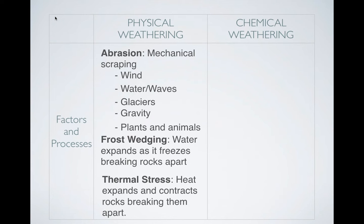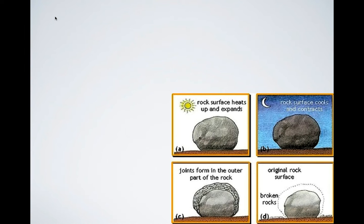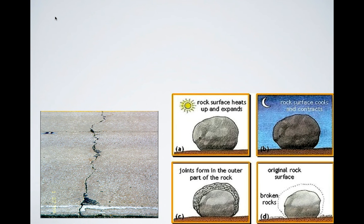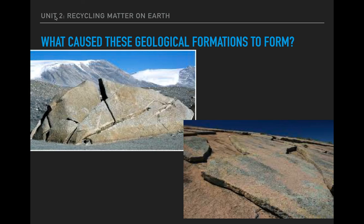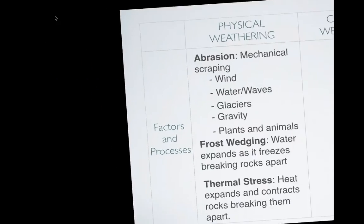What about thermal stress? Thermal stress is kind of like frost wedging but the opposite — it's when heat causes expansion and contraction. When it's hot, rocks expand, and then they contract when it's cold. By doing that repeatedly, they start to break themselves apart from the inside. Here's a nice diagram: the heat makes the rock expand, then at night it's cool, and before you know it you get little bits of broken rock and cracks in sidewalks caused by thermal stress. You've probably seen that before — what maybe used to be one big rock is now breaking into little chunks.